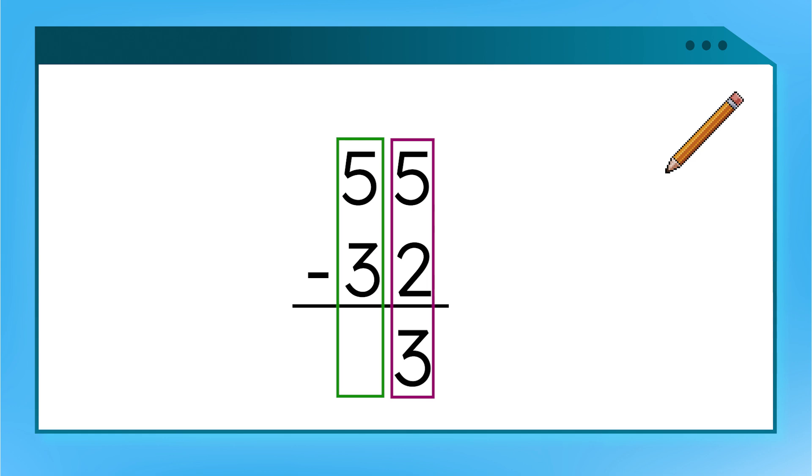How about our tens place? Way to go! 5 minus 3 equals 2. We write that under our tens place. So our answer is 23. Did you write those answers in your guided notes? Awesome! Now I want to show you another powerful place value strategy.